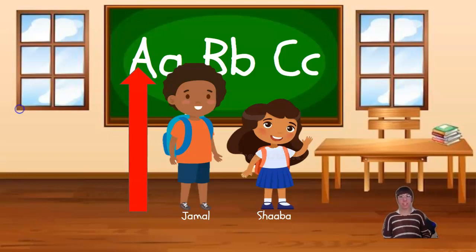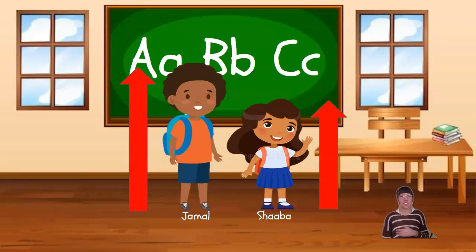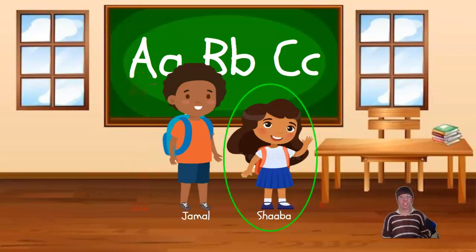Now let's measure Shaba. We measured Shaba by starting at the bottom of her feet and measuring to the top of her head. That distance is less than Jamal's because her arrow is smaller. That means that Shaba is shorter than Jamal and that Jamal is taller than Shaba. So which person is shorter? Shaba. Very good. Shaba is shorter because there is less distance between her feet and the top of her head.